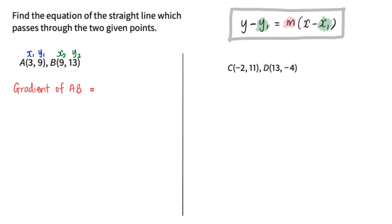In order to find the gradient of a line, it will be y1 minus y2 divided by x1 minus x2. In this case, that's 9 minus 13 over 3 minus 9, which gives me a gradient of 2 over 3.